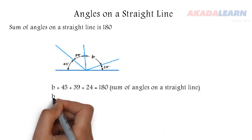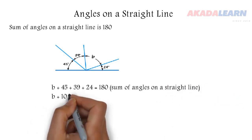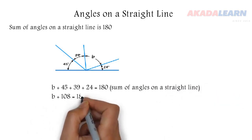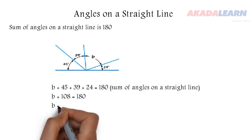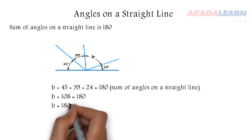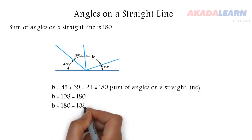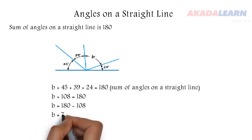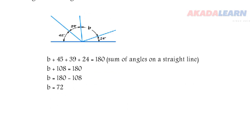So we add the known numbers there — we have 108. We subtract 108 from both sides and we discover our B is 72 degrees.